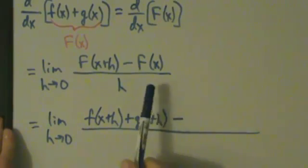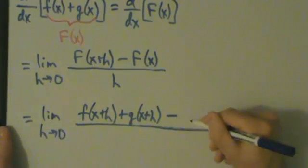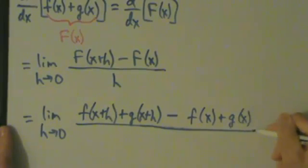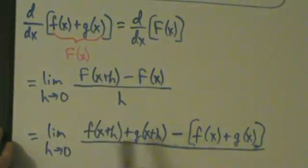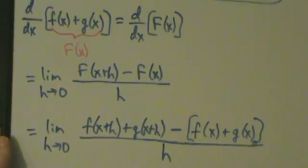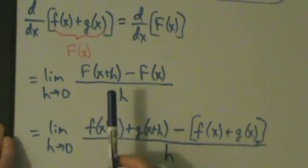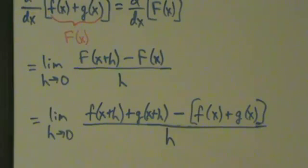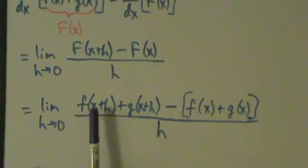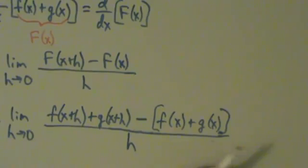Then we're going to do minus big F(x). We have to be careful with parentheses here. Big F(x) is little f plus g, so this is going to be [f(x) plus g(x)], with square brackets around it. Now what we want to do is group f with f and g with g. We drop these brackets by distributing the minus sign.